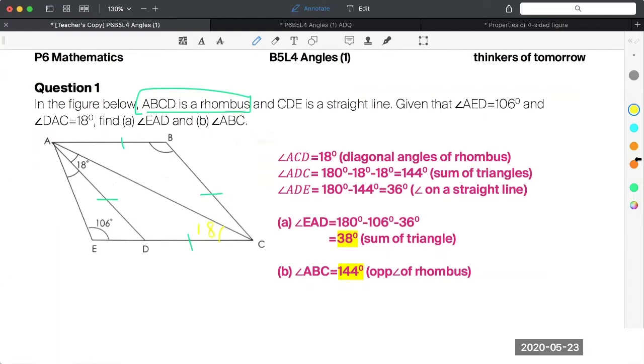All right. What is angle ADC? 180 minus 18 minus 18 equals 144. How do I get 144? Because of the angle sum of a triangle.